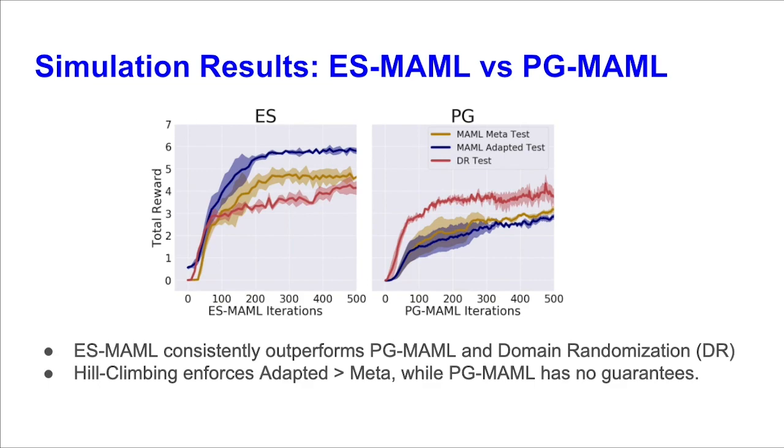We further compare ES-MAML and PG-MAML by plotting their corresponding domain randomization policies, which are shown in red, their meta-policies, which are shown in yellow, and their adaptive policies, which are shown in blue. We see that not only does ES-MAML consistently outperform PG-MAML, but also, the hill-climbing operator enforces the adaptive policy performance to be higher than the meta-policy performance. However, PG-MAML has no such guarantees, and we thus see that actually, its meta-policy's reward is higher than the adaptive policy's reward, which shows that PG-MAML's adaptation procedure might even be hurting its performance.